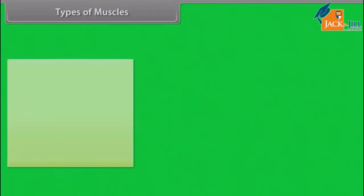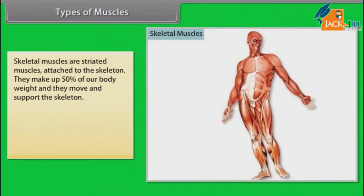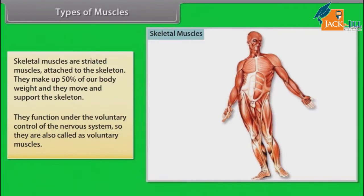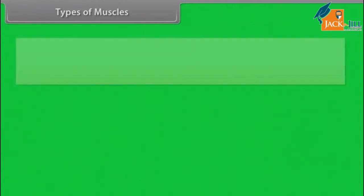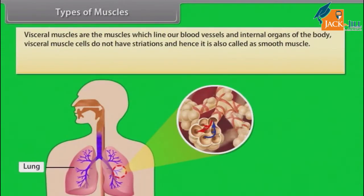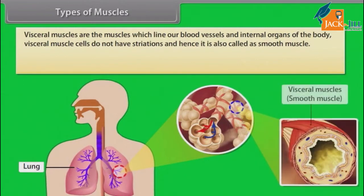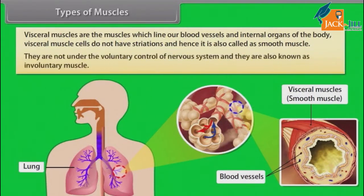Skeletal muscles are striated muscles attached to the skeleton. They make up 50% of our body weight and they move and support the skeleton. They function under the voluntary control of the nervous system, so they are also called voluntary muscles. Visceral muscles line our blood vessels and internal organs. Visceral muscle cells do not have striations, hence they are also called smooth muscle.